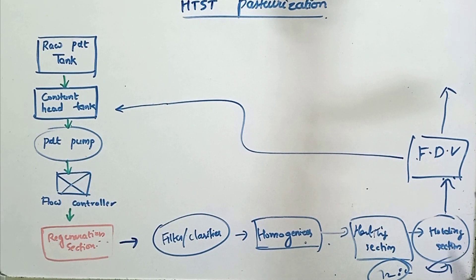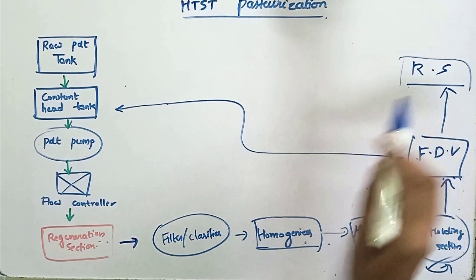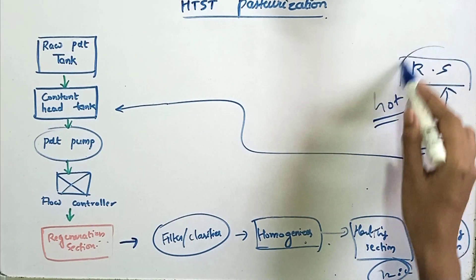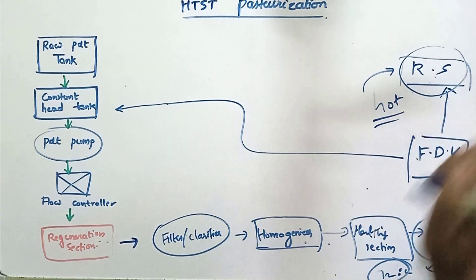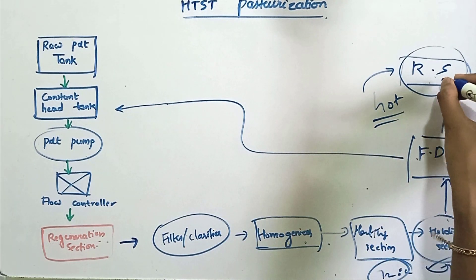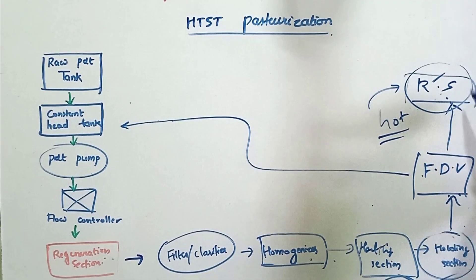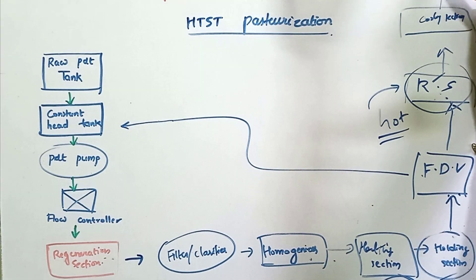If the milk is properly pasteurized, it flows into the next section, which is a second regeneration section. After pasteurization the milk will be hot, and this regeneration section cools it — since before packaging we have to lower the temperature. The pasteurized milk is cooled here with the help of the raw milk from the next batch. Further cooling is done by the cooling section. After the cooling section, we get the pasteurized product. That is the complete flow diagram for HTST pasteurization.